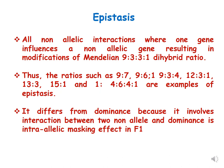If you add all the parts of these ratios, they will all be equal to 16. For example, 9:3:3:1 totals 16. Similarly, 9:7 totals 16; 9:6:1 is 16; 9:3:4 is 16; 12:3:1 is 16; 13:3 is 16; 15:1 is 16; and 1:6:4:1 will also be 16.